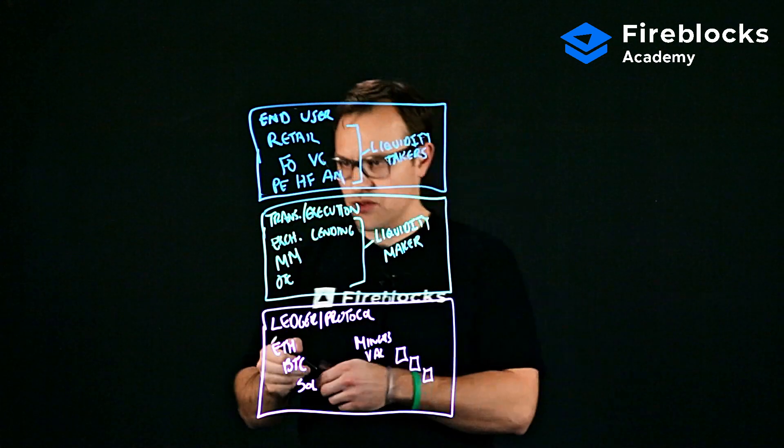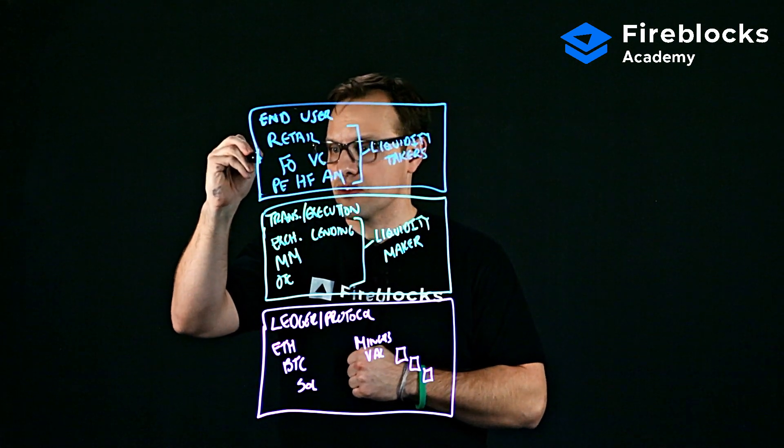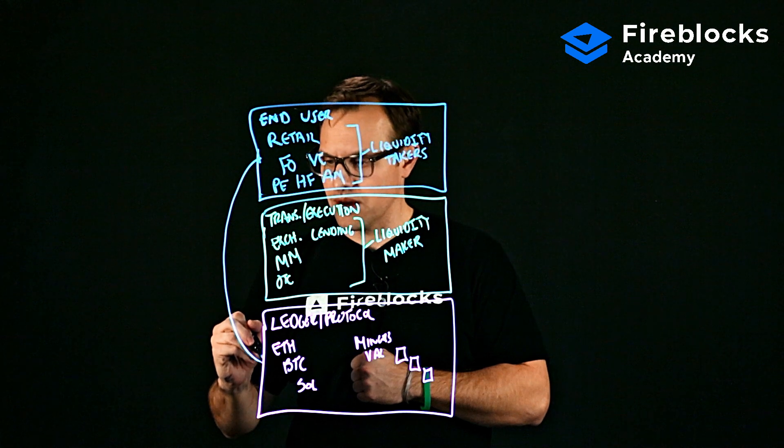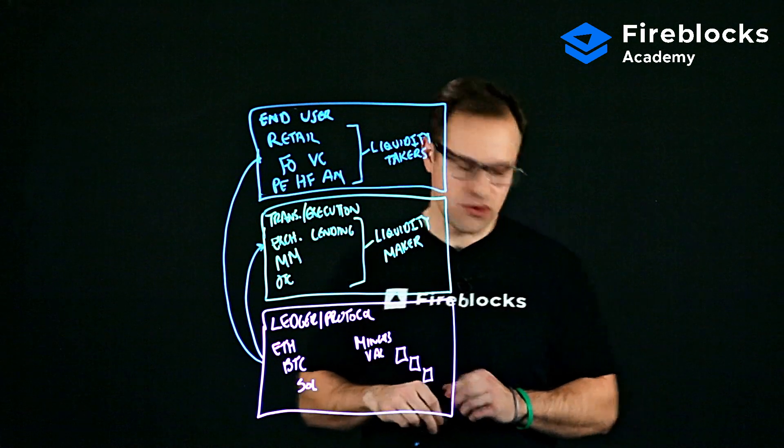And essentially, how all this works is that the folks in the end user layer will essentially take these tokens down the ledger and protocol layer and actually transact with them in the actual transaction or execution layer.